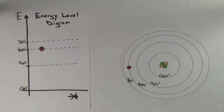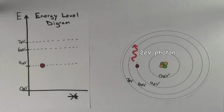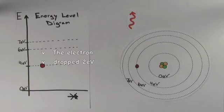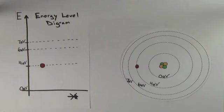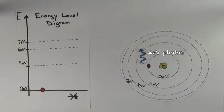But since the electron started at the 6 eV energy level, it could have also fallen first to the 4 eV energy level, emitting a 2 eV photon in the process. It's a 2 eV photon because the electron dropped 2 electron volts in energy. And now that the electron's at the 4 eV energy level, it'll fall back down to the ground state, emitting a 4 eV photon in the process.